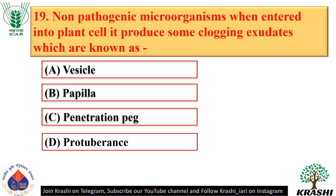Question number 19. Non-pathogenic microorganisms when entered into plant cells produce some clogging exudates, which are known as proturbulence.